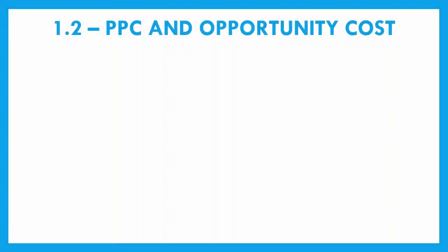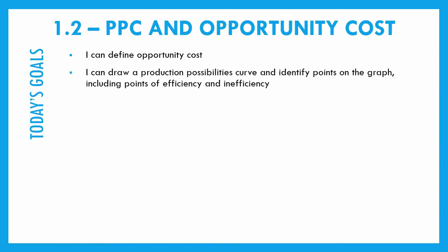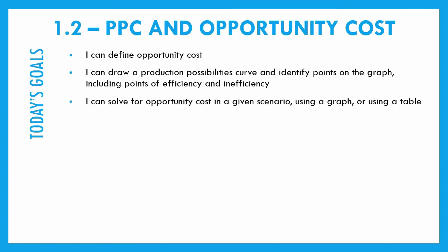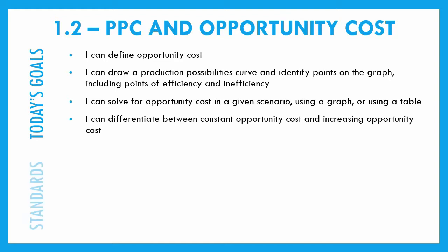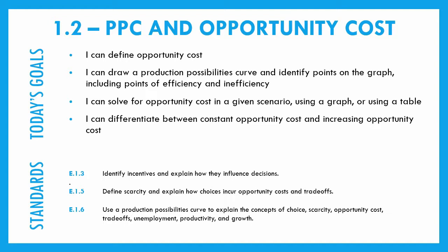Here we have 1.2 PPC and opportunity cost. What we're going to be looking at today, first and foremost, is being able to define the term opportunity cost. We're going to draw a production possibilities curve, our PPC, and identify some of those points on it. We're going to solve for opportunity cost within a given scenario, whether through using a graph or a table. And finally, we're going to differentiate between constant opportunity cost and increasing opportunity cost.